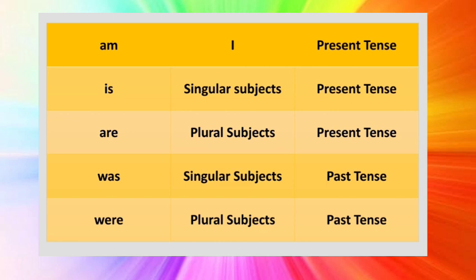Like, she is cooking the meal. It is raining heavily. The helping verb are is used with plural subjects and it is used in present tense. Are is also used with you in singular or in plural forms.